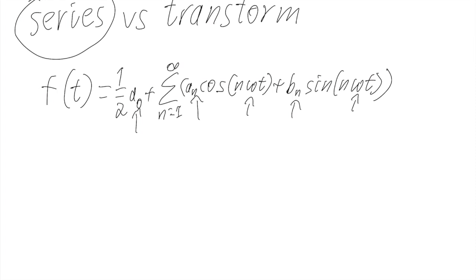Okay. So what is the formula for a_n and b_n? Well a_n equals 2 over capital T where capital T is the period of our waveform times integral from 0 to T.